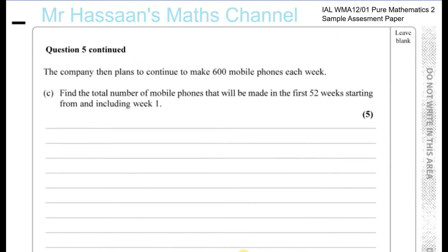Now for part C. The company then plans to continue to make 600 mobile phones each week. Find the total number of mobile phones that will be made in the first 52 weeks starting from and including week 1.